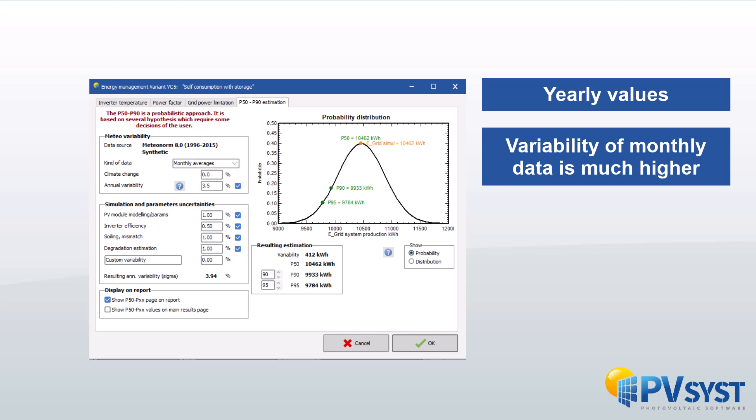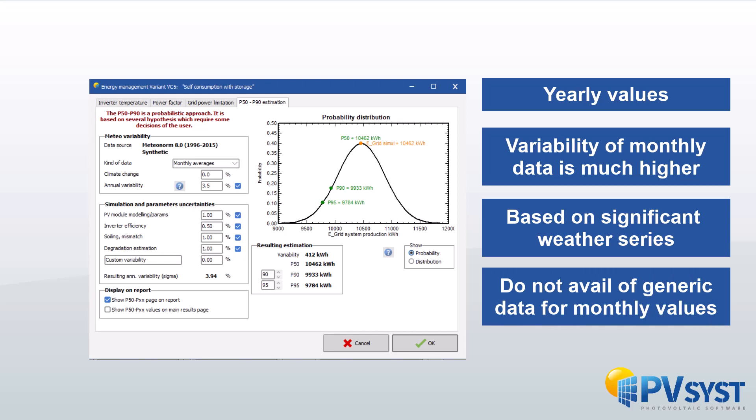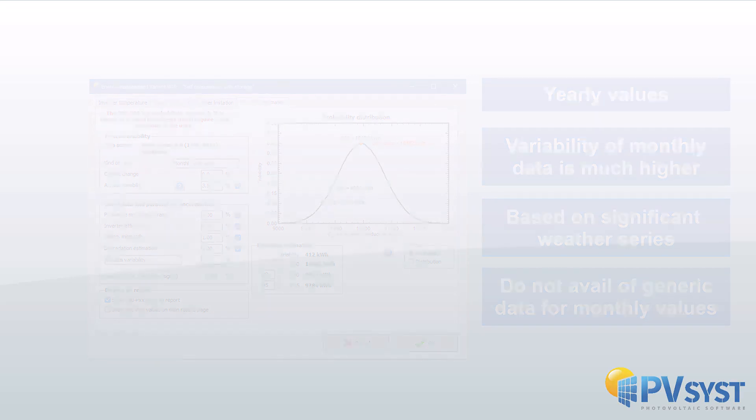Moreover, the probability profiles for determination of the P90 are statistical estimations, which should be based on significant weather series, at least 15 to 20 years of Meteo data. But we do not avail for such generic data for monthly values, and this would be very dependent on the climate and the season. If you want to do such evaluations, you should find monthly Meteo data for 15 years or more for your site, and evaluate the probability distribution month by month.